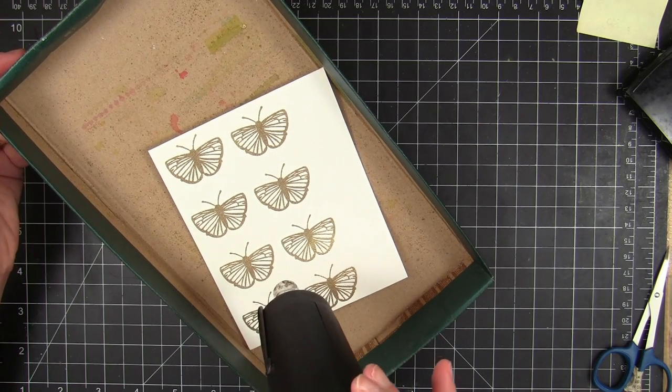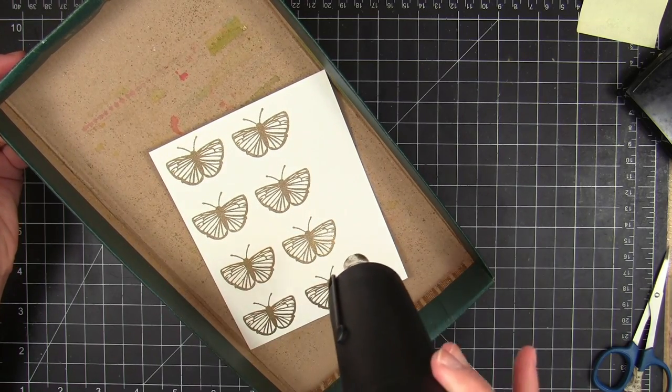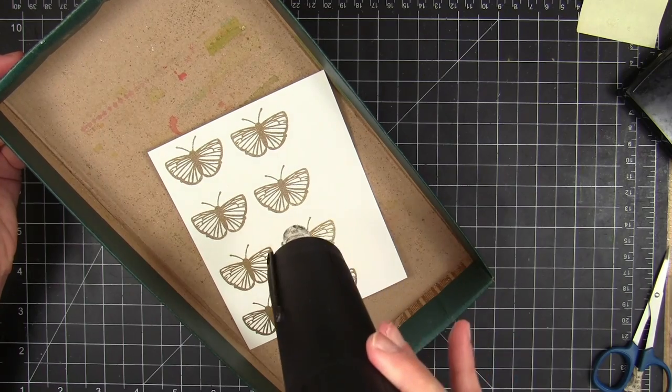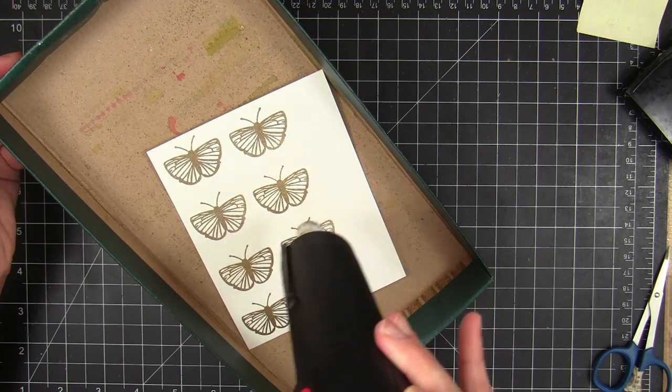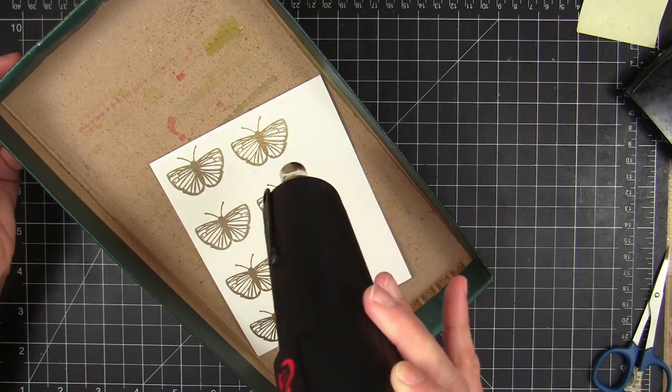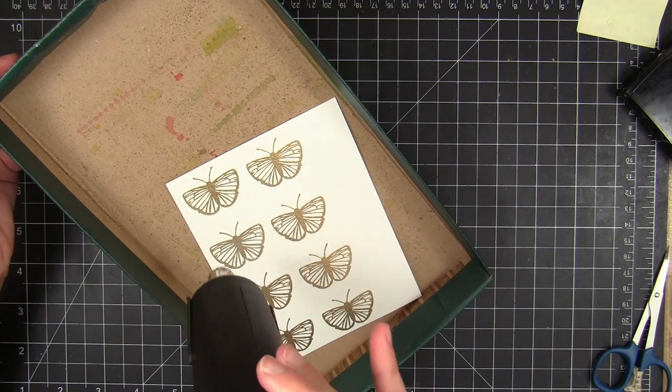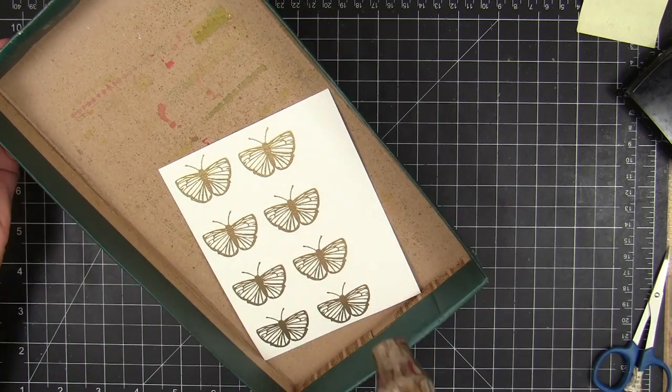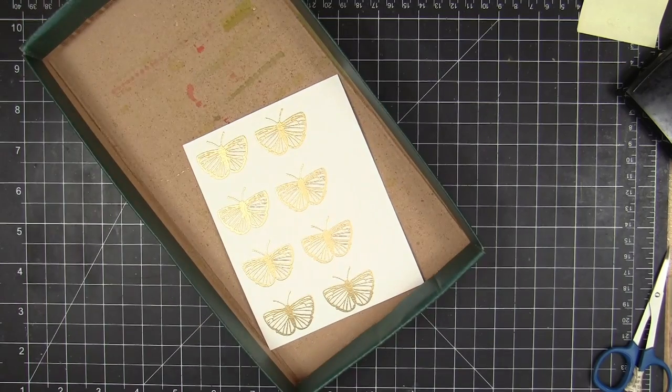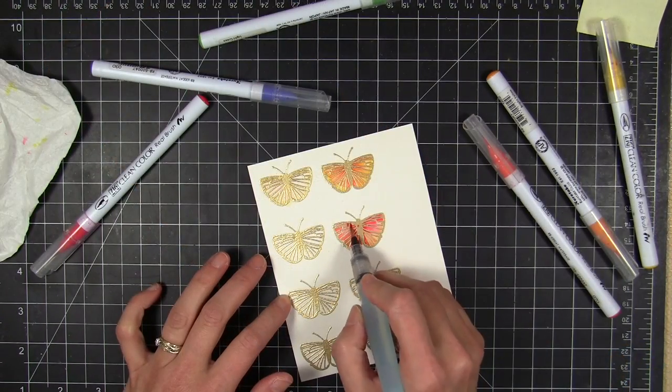And then I'm gonna preheat my heat tool for about 30 seconds, make sure it's nice and hot. And then I tossed this piece of watercolor paper into a cardboard lid and I'm just gonna heat it up there and get those all embossed all at the same time.